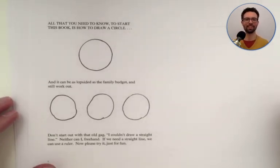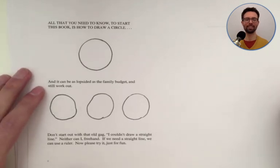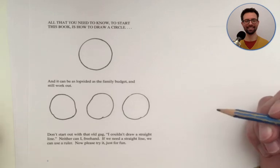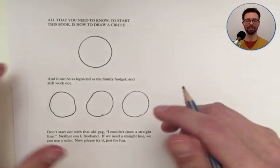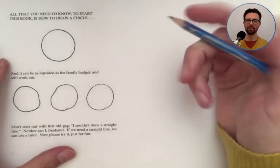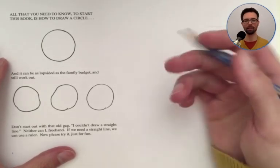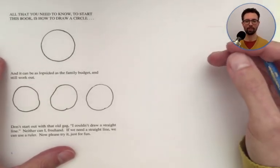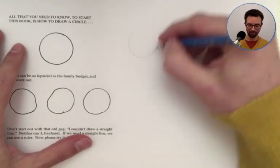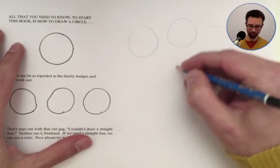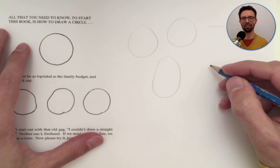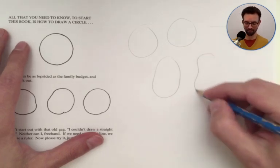This is page one of Fun With a Pencil. He says all you need to know is to be able to draw a circle — it doesn't have to be a perfect circle. It can be as lopsided as the family budget and still work out. So right now, take a pencil or a mark-making tool — pen or anything else — and some paper. Let's draw together. You can make some potato shapes as well — it all works in your favor because you get interesting characters out of that.